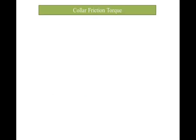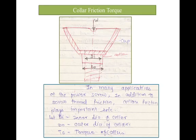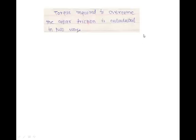The next topic is collar friction torque. You cannot use the power screw as it is; the power screw has to be supported by using a collar or nut arrangement. Since threads are available, the collar or nut will also have an internal thread. Here, Di is the inner diameter or minor diameter of the internal thread, D0 is the outer diameter or major diameter, D is the nominal diameter, DC relates to the collar friction torque, and W is the load applied on the collar.